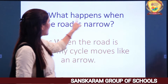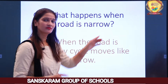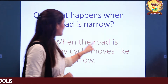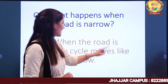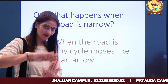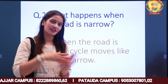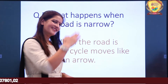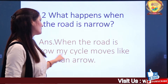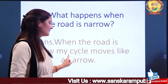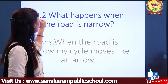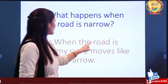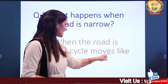Question number 2: what happens when the road is narrow? Raasta jab tang hota hai, kya hota hai? Answer: when the road is narrow, my cycle moves like an arrow. Baakki gaadiyaan ruk jati hain — trucks, bus, jeeps wahaan se turn back kar jate hain. Lekin meri cycle ek arrow ke jaise nikal jati hai.